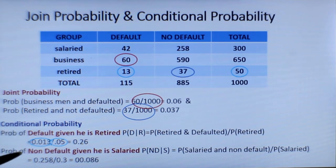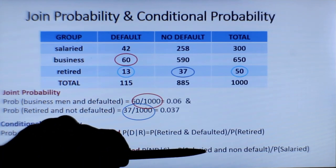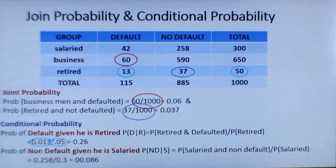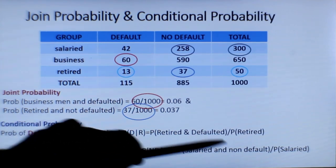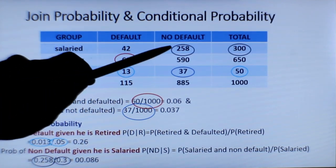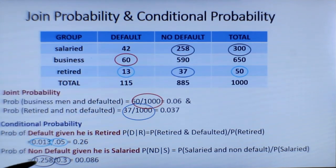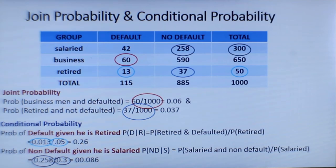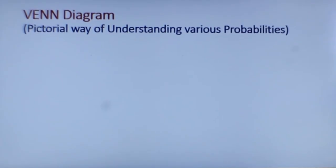The second instance is the probability that a person is a non-defaulter given that he is salaried, which equals probability of salaried and not defaulted over probability of salaried. Salaried and not defaulted is 258 over 1000, which is 0.258, and probability of salaried is 300 over 1000, which is 0.3. So you get the conditional probability given that he is salaried and not defaulted.